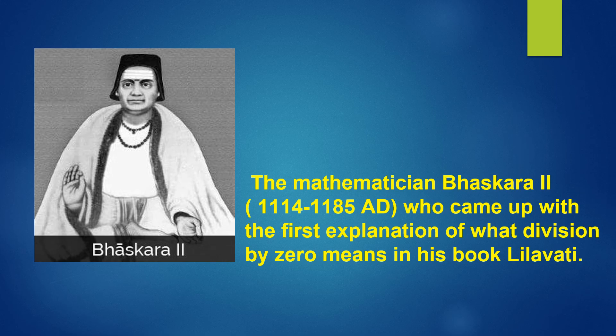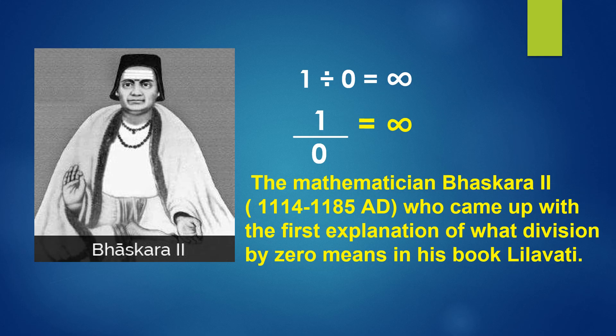Later, Bhaskara II, a great mathematician, came up with the first explanation of what division by zero is. He mentioned this in his book Lilavati. He gave the conclusion that one divided by zero is infinity — one by zero equals infinity. Let's see how he justified this with some examples.